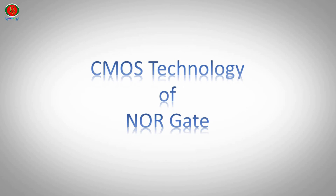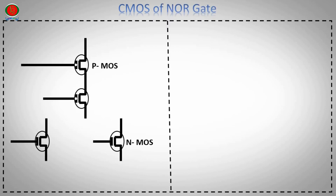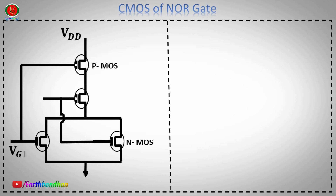For CMOS technology of the NOR gate: 2 NMOS transistors and 2 PMOS transistors are used. The NMOS transistors are in parallel connection and the PMOS transistors are in series connection. The transistor is connected to ground, PMOS transistors to VDD power supply, with NOR gate input terminals VG1 and VG2, and output VD.